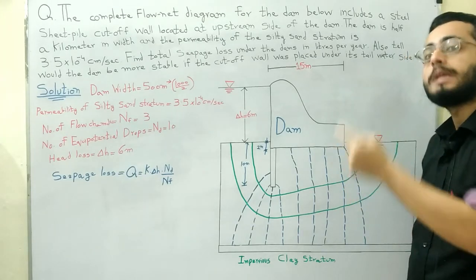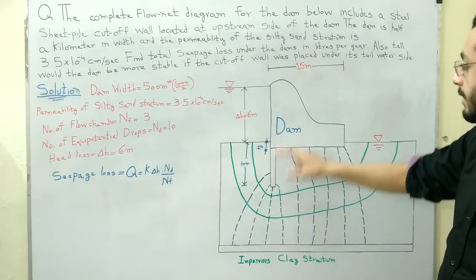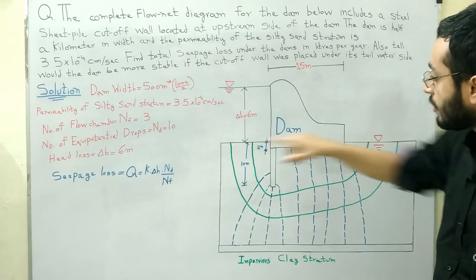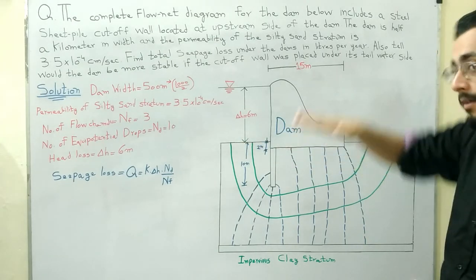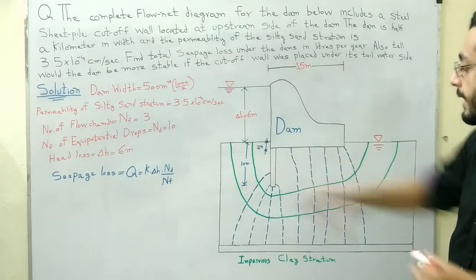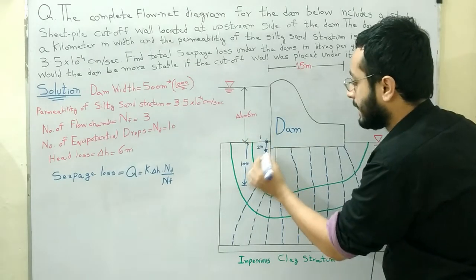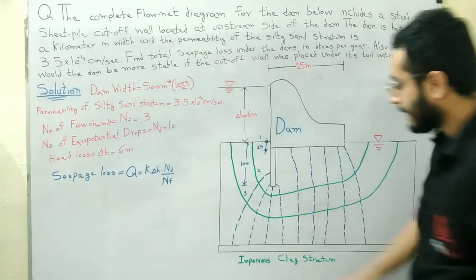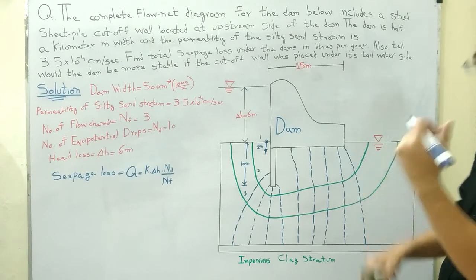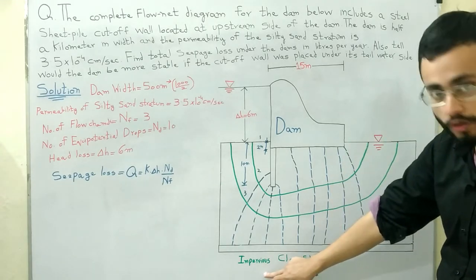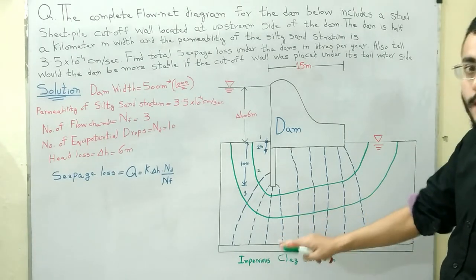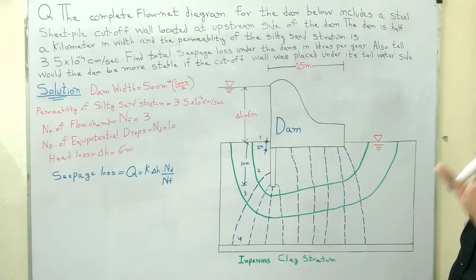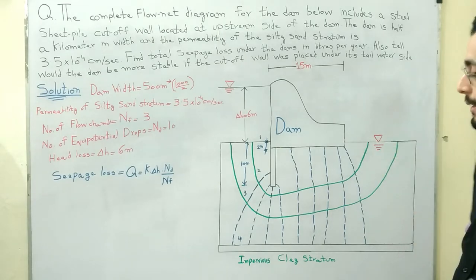To count the flow lines: the top surface of the soil is considered the first flow line. Then there is a second and a third green line. The impervious clay stratum at the bottom is also considered a flow line. So in total, we have four flow lines in this flow net diagram.